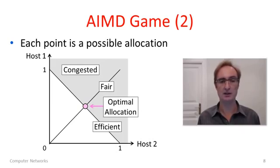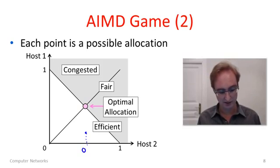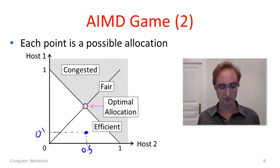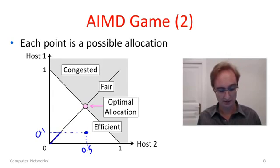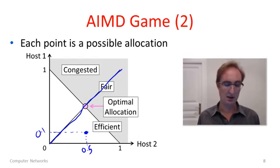The AIMD game takes place on a plane representing all possible bandwidth allocations. A point on this plane has a bandwidth allocation — for example, about 0.5 to Host2 and 0.1 to Host1. There are several key features of this diagram. The fair allocation is the line at 45 degrees — Y equals X — where Host1 and Host2 get an equal amount of bandwidth, whether that's 0.3, 0.4, or 0.5 units each.